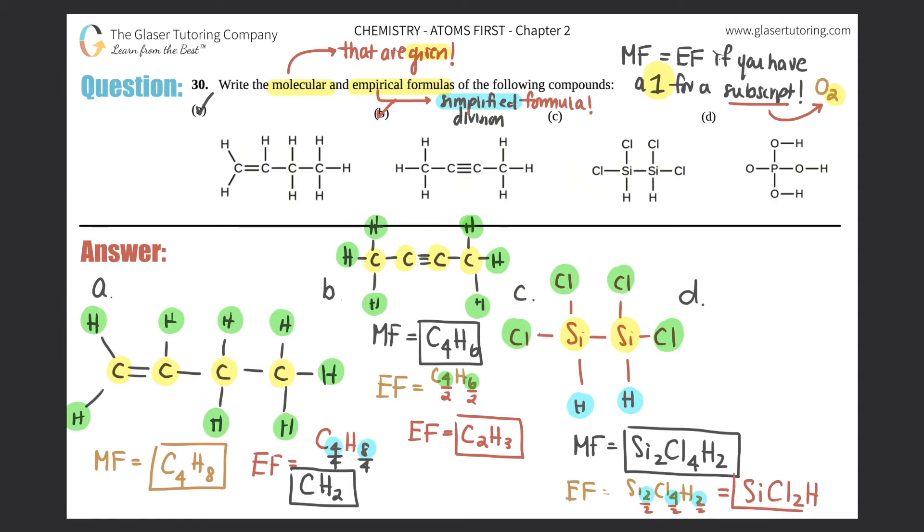And your empirical formula would be Si - just one of them so you don't have to write the number - Cl2 and H. Box that answer off, that is the empirical formula for the third one. And now last but not least we got a P, an O-O-H, O-H, O-H.